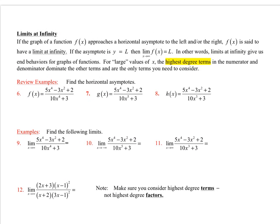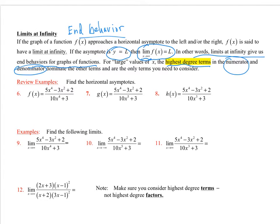Next page: limits at infinity, also called end behavior. What is our behavior as x goes to infinity? If we're approaching some line y equal to L, then the limit as x approaches infinity of f(x) equals L. Limits at infinity give us end behaviors for graphs. We look at the highest degree terms in the numerator and denominator — everything else is drowned out. If you plug in a billion, a term raised to the fourth power will dominate one raised to the second.